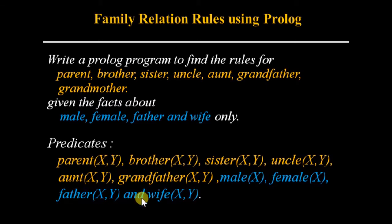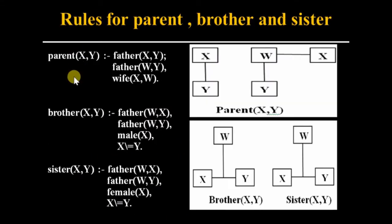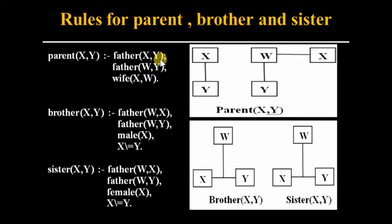We need the following predicates. X is the parent of Y. X will be parent if X is the father of Y, or W is the father of Y and X is the wife of W — meaning X is the mother of Y. So the rule is: parent(X,Y) if father(X,Y); or father(W,Y) and wife(X,W).